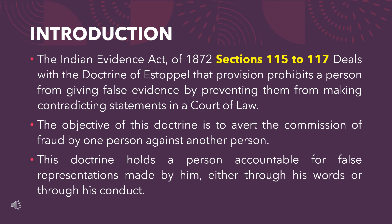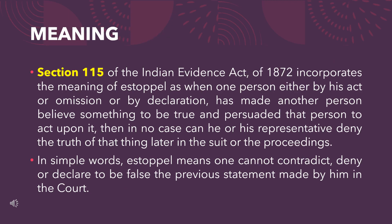The Indian Evidence Act of 1872, Sections 115 to 117, deals with the doctrine of estoppel. That provision prohibits a person from giving false evidence by preventing them from making contradicting statements in a court of law. The objective of this doctrine is to avoid the commission of fraud by one person against another person. This doctrine holds a person accountable for false representations made by him either through his words or through his conduct.